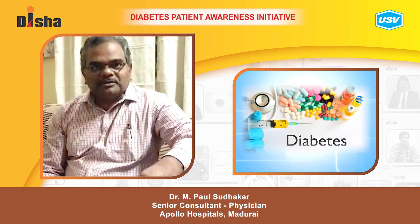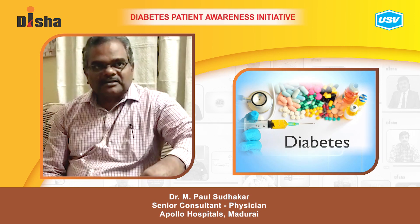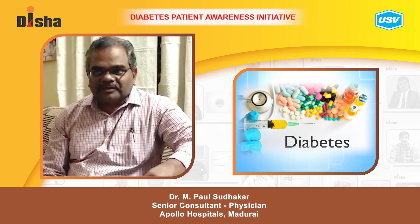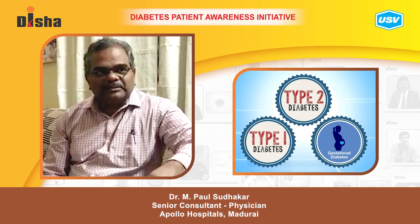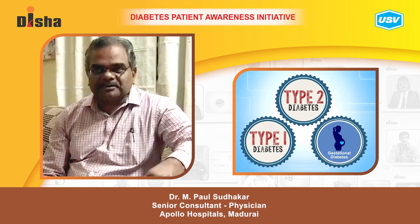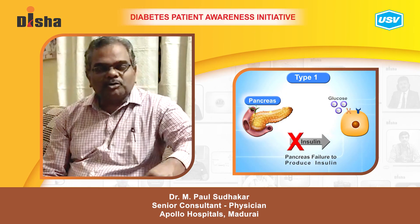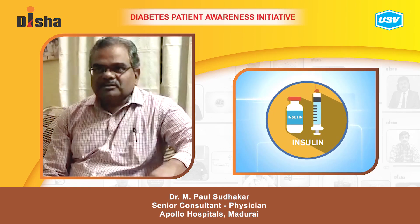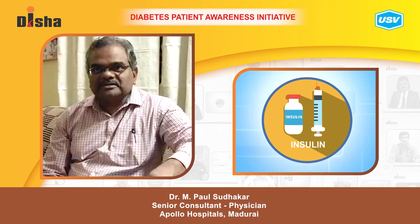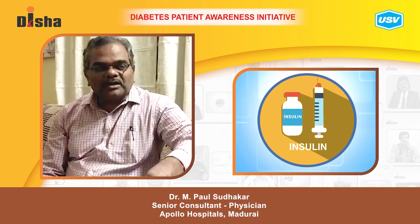Now I am going to talk about diabetes — its causes, complications, and management. Diabetes has mainly three types: Type 1, Type 2, and gestational diabetes. Type 1 is an autoimmune condition caused by destruction of the pancreatic beta cells. Management is only by insulin; oral drugs are not used.